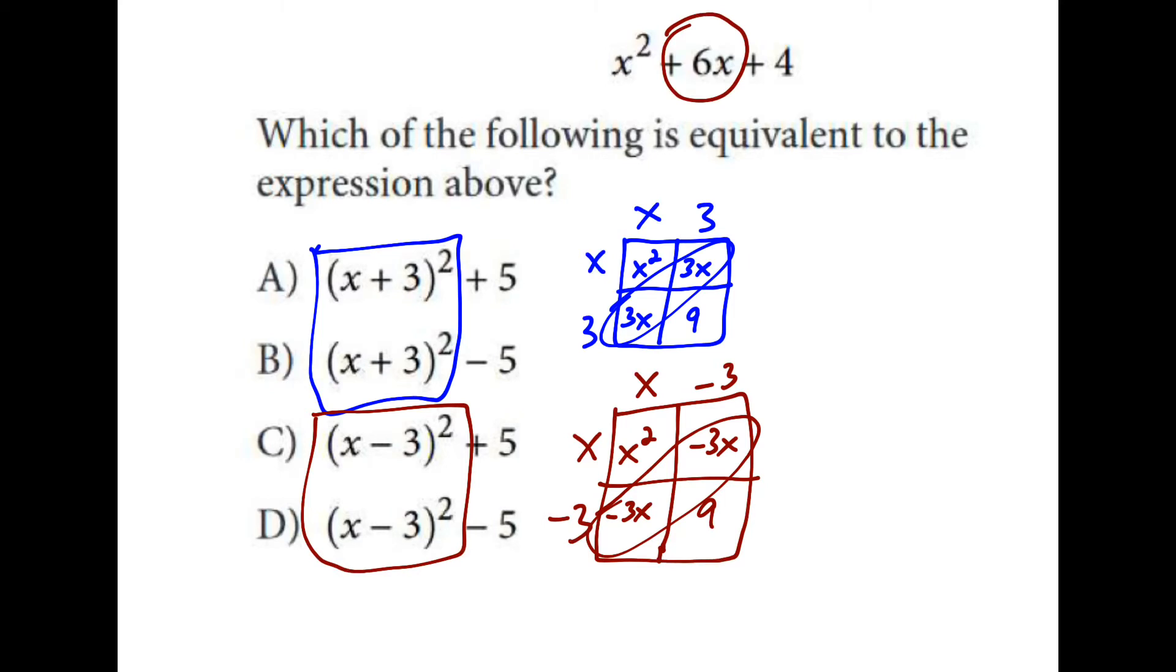So looking at this middle term, it has to be either a or b because I want positive 6. So the only thing left to do is to take a look at this 9 and figure out how do I get to that 4. And it turns out by subtracting 5, I'll get there, b.